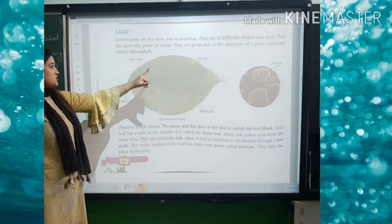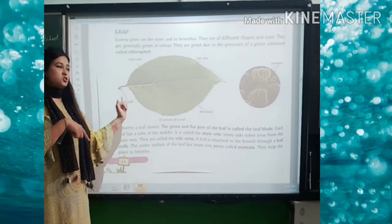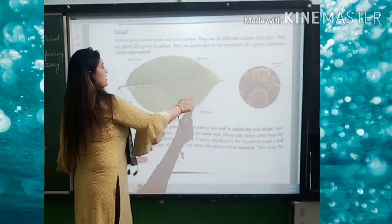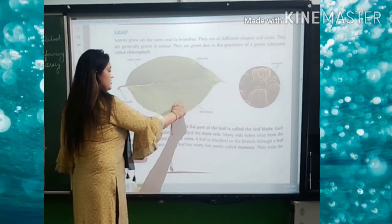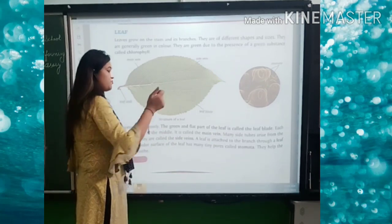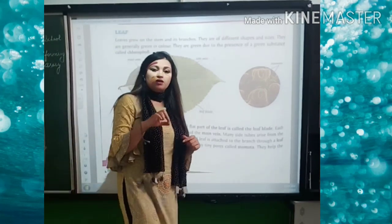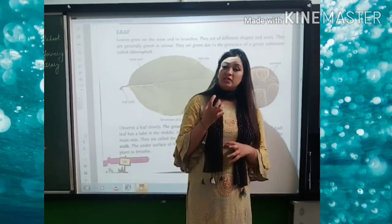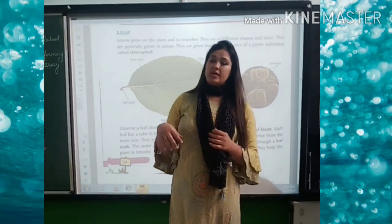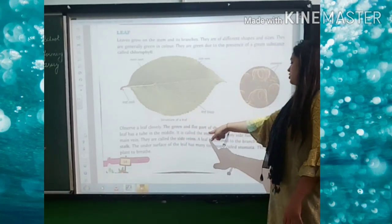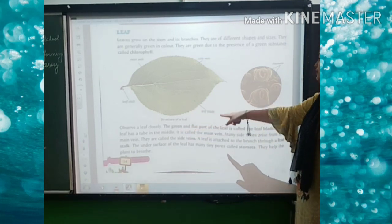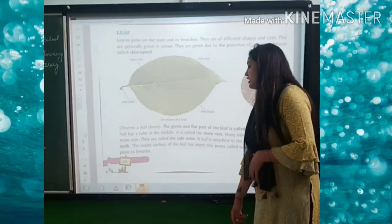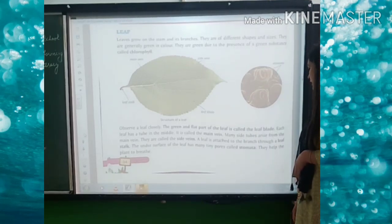Let's talk about the structure of a leaf. The part which is attached to the stem is known as the stalk. The line in the center of the leaf is the main vein. The smaller veins branching from the main vein are known as side veins. The green and flat part of the leaf is called the leaf blade. The tiny pores on the underside of the leaf are known as stomata — they help the plant to breathe, taking in carbon dioxide and releasing oxygen.